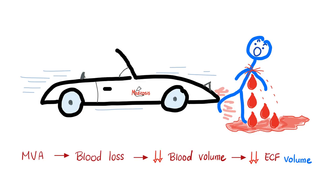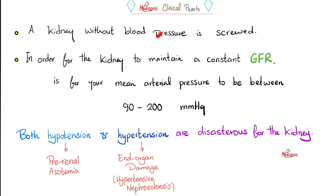Consider this: imagine I was crossing the street, got hit by a car, and lost a lot of blood. Blood loss decreases blood volume — hypovolemia or extracellular fluid volume depletion. Every organ will suffer, especially the kidney, because the kidney is dependent on an adequate mean arterial blood pressure to maintain a constant glomerular filtration rate. If you have a low GFR, we call you a kidney failure patient. Adequate blood pressure is paramount for kidney function.